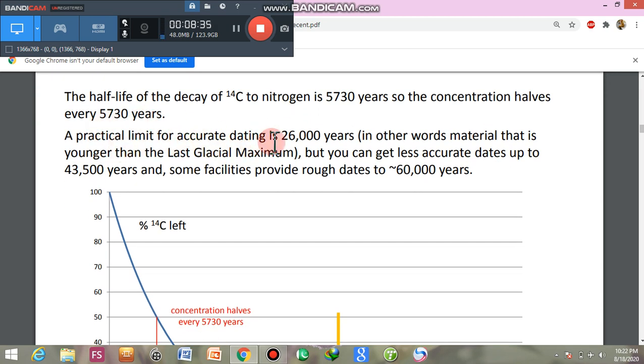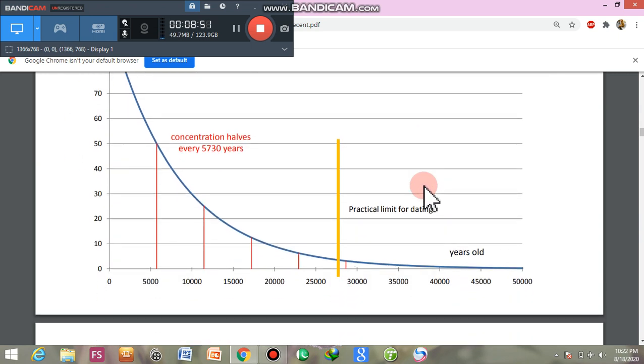A practical limit for accurate dating is 26,000 years. In other words, material that is younger than the last glacial maximum, but you can get accurate dates up to 60,000 years.